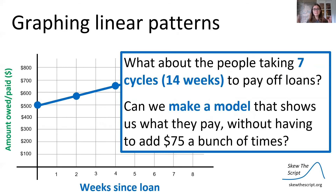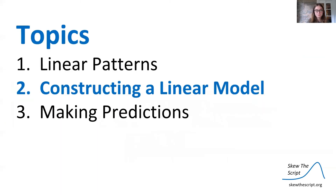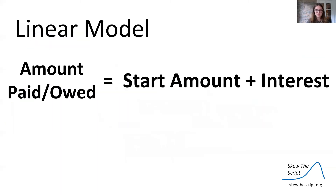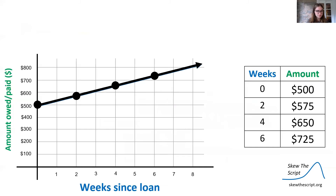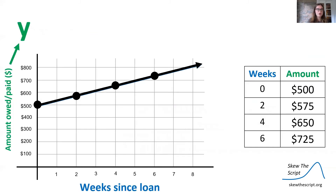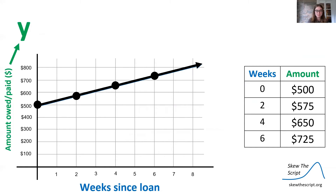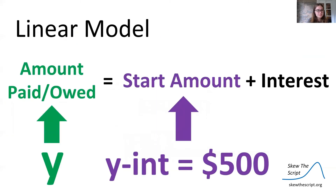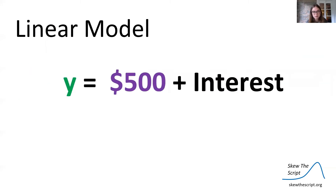What about people taking seven cycles or 14 weeks to pay off their loans? Can we make a model that shows us what they pay without having to add $75 seven times? We can construct a linear model: amount paid slash owed equals the starting amount plus our interest. Our y is the amount owed slash paid, and our starting amount — our y-intercept — is $500. So we have y equals $500 plus interest.